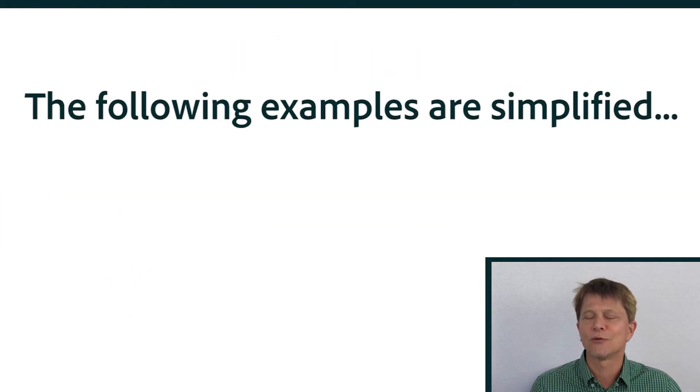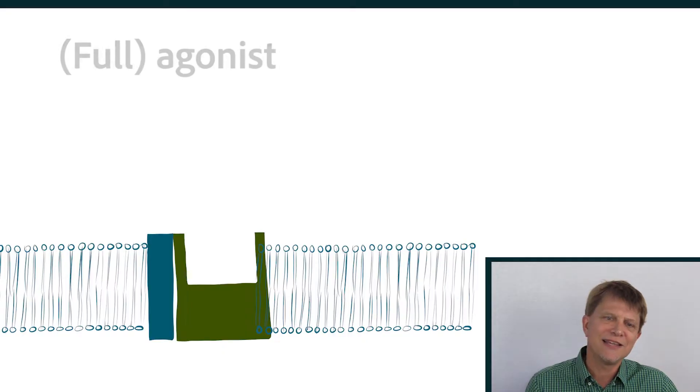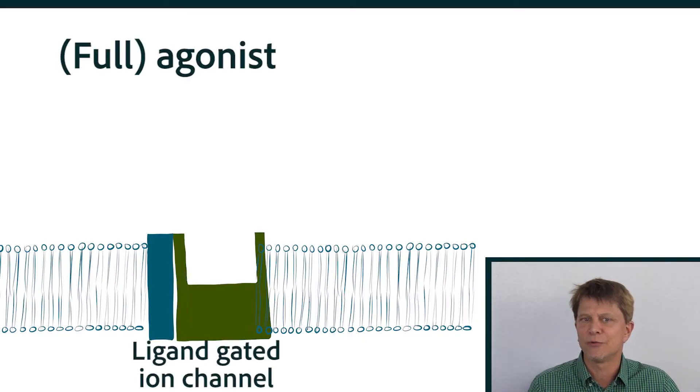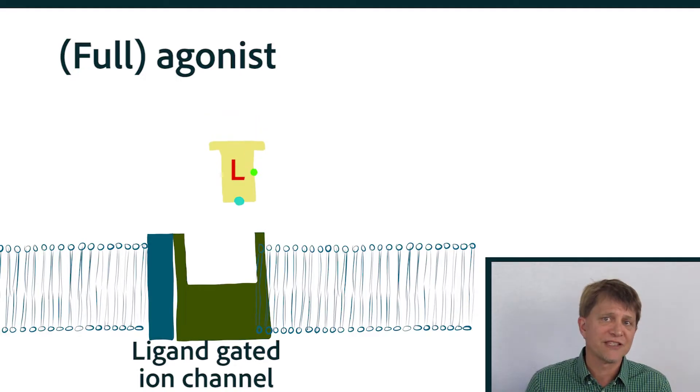Let's take a closer look at what happens with medications as they bind to a receptor. Using the simplest type of cellular receptor as an example, the ligand-gated ion channel. Recall that the ligand, the natural substance for which the receptor is made, can bind to the receptor because of its shape.